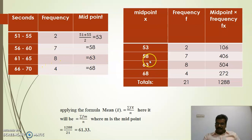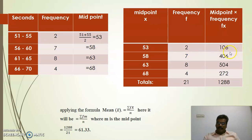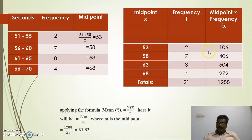Midpoints are treated as x. Applying the formula, each midpoint corresponding to each class is multiplied by its corresponding frequency — this product is called fm. These fm values are added together to get sigma fm, and then divided by n. Here also, n is calculated by adding all the frequencies together.